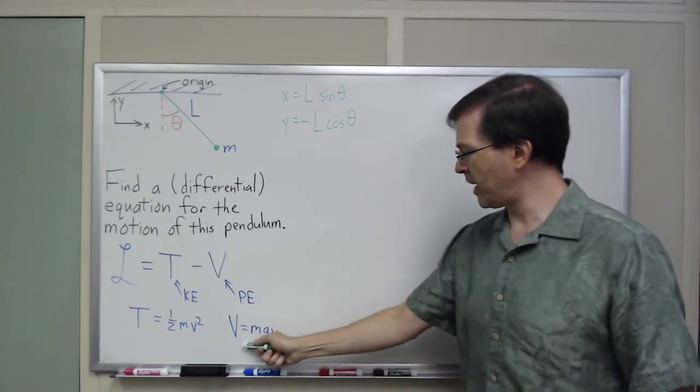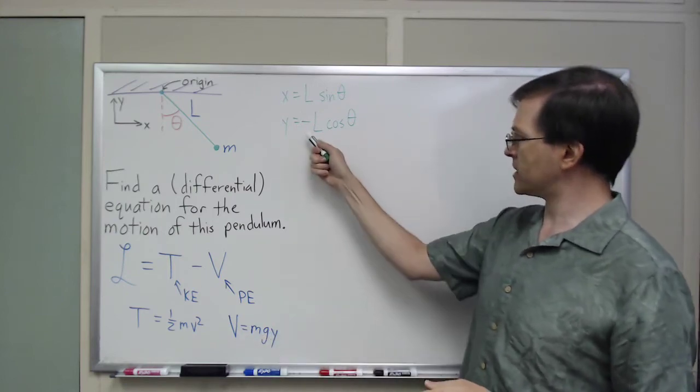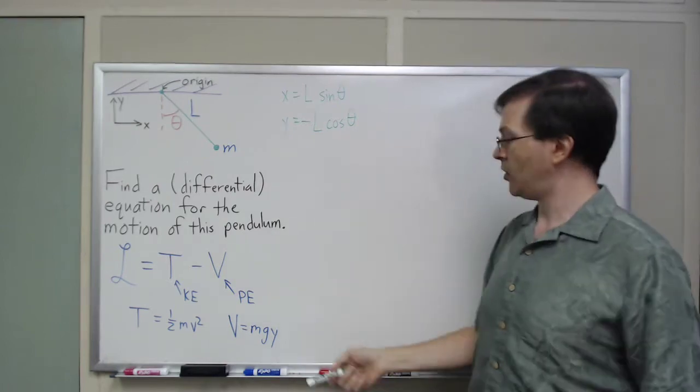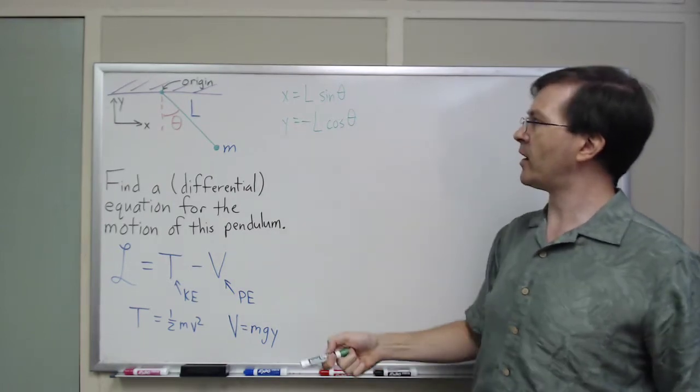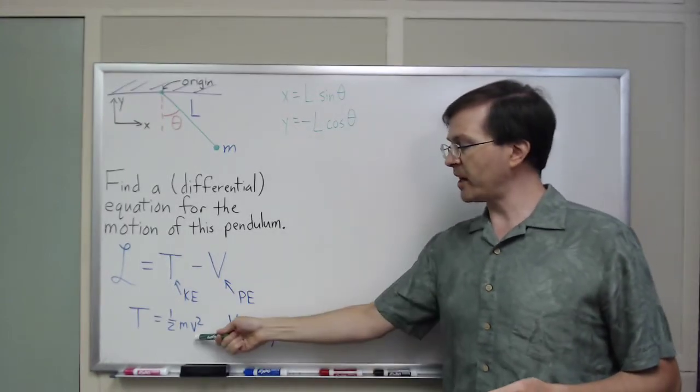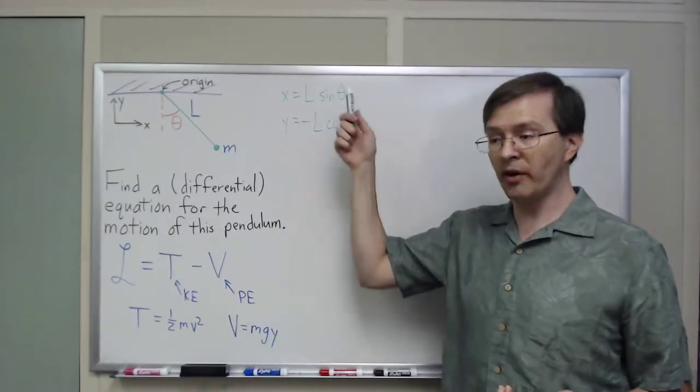And so, V, I'm going to be able to put in just minus mgL cosine theta, that's going to be my V when I put that in. So, I know that already. For my capital V, my potential energy, for my speed, I'm going to need to know the derivatives of these. So let's go ahead and take those derivatives.